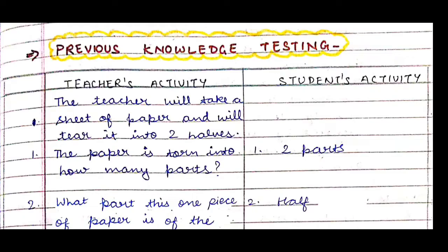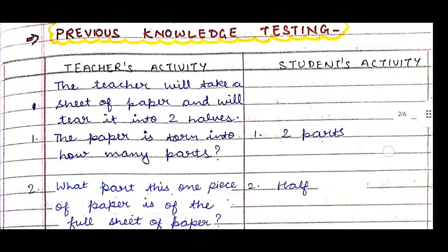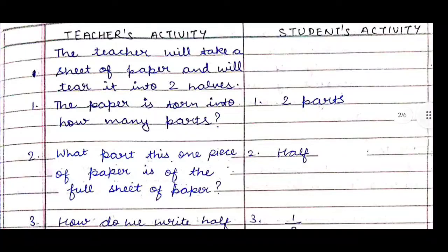The teacher will take a sheet of paper and tear it into two halves from the center, then ask a few questions. First question: the paper is torn into how many parts? The students will say two parts. Next question: what part is this one piece of paper of the full sheet? They will say half.